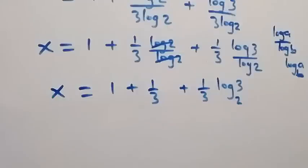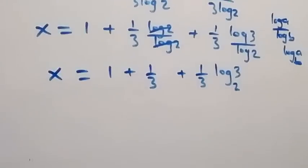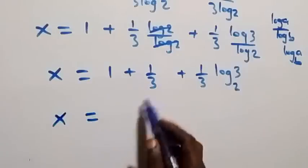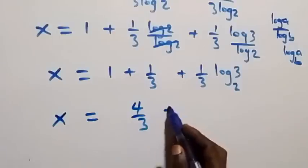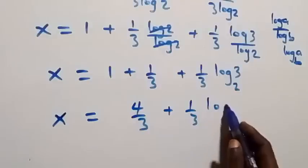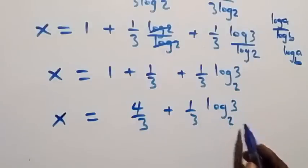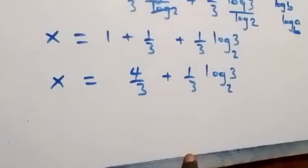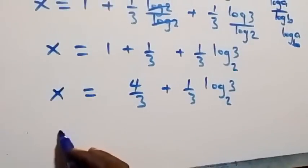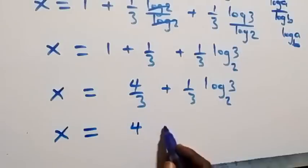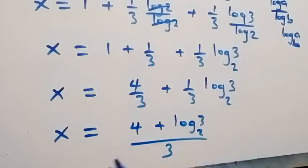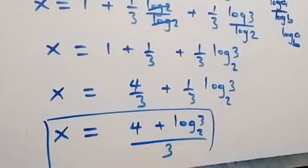We can also bring our answer together. Since 1 plus 1 over 3 equals 4 over 3, we have x equals 4 over 3 plus 1 over 3 log 3 base 2. Writing with a common denominator of 3, x equals 4 plus log 3 base 2, all over 3. This is the value of x in this given problem.